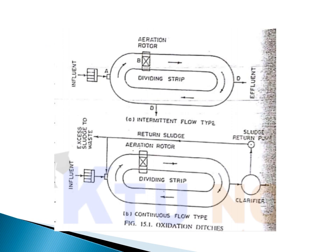There are two types: intermittent flow type and continuous flow type. In the intermittent flow type, there is no need to provide a separate settling tank. The inlet is closed, sewage remains inside the oxidation ditch, and the rotor aerates the sewage. After a certain period, the rotor stops, allowing sludge to settle at the bottom; sludge is then removed from the bottom and the effluent is taken out. In continuous flow type, a clarifier — that is, a separate settling tank — is used, and a part of the sludge is returned to the oxidation ditch.